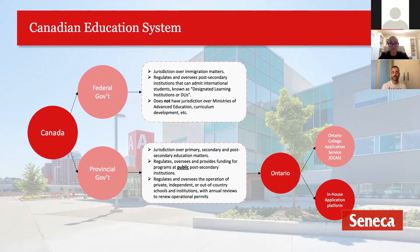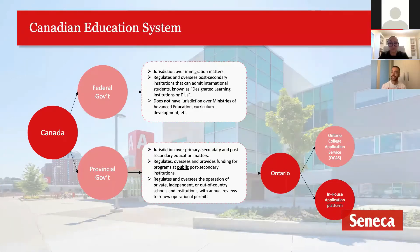Even though the federal government has oversight, the education system is primarily managed at the provincial level. Canada does not have a federal secretariat of education — instead, every single province has its own Ministry of Education or Advanced Education that oversees curriculum development, approves or disqualifies programs, and provides funding to public institutions.